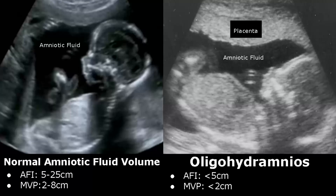The second method is Maximum Vertical Pocket, or MVP, in which a single measurement is taken from the deepest pocket of fluid free of fetal parts and umbilical cord. This value must be between 2 to 8 cm for normal fluid volume. This image shows a normal amount of Amniotic Fluid around the fetus.